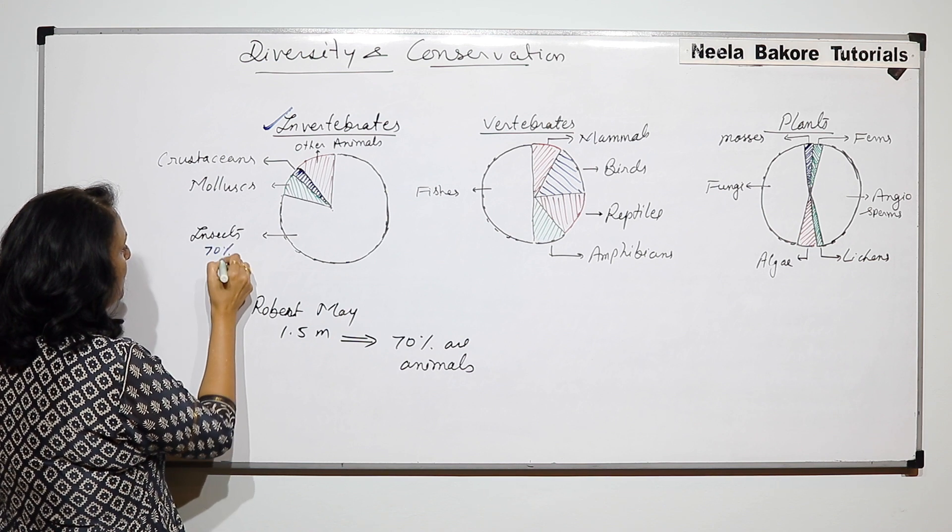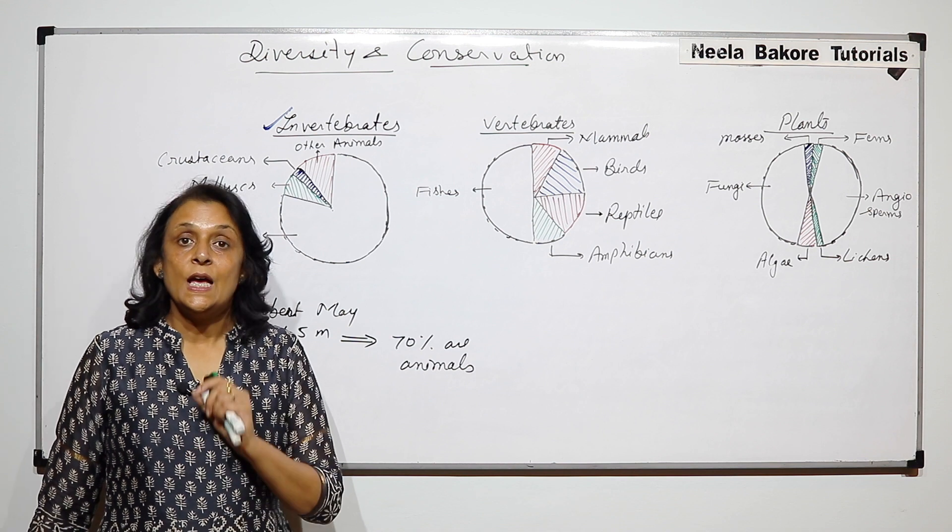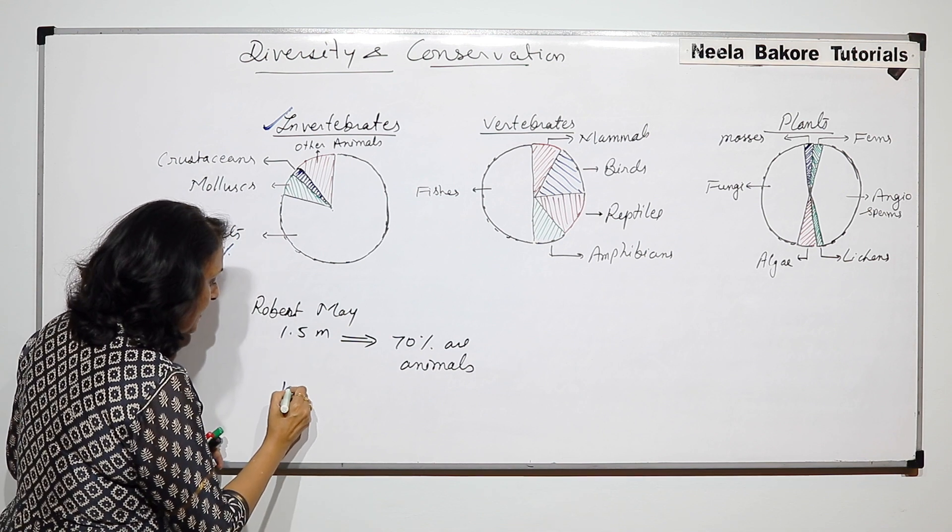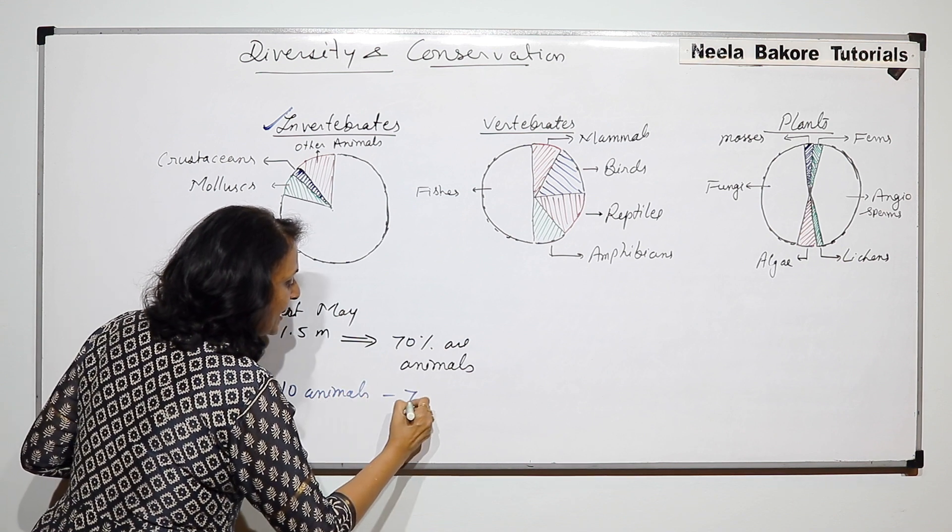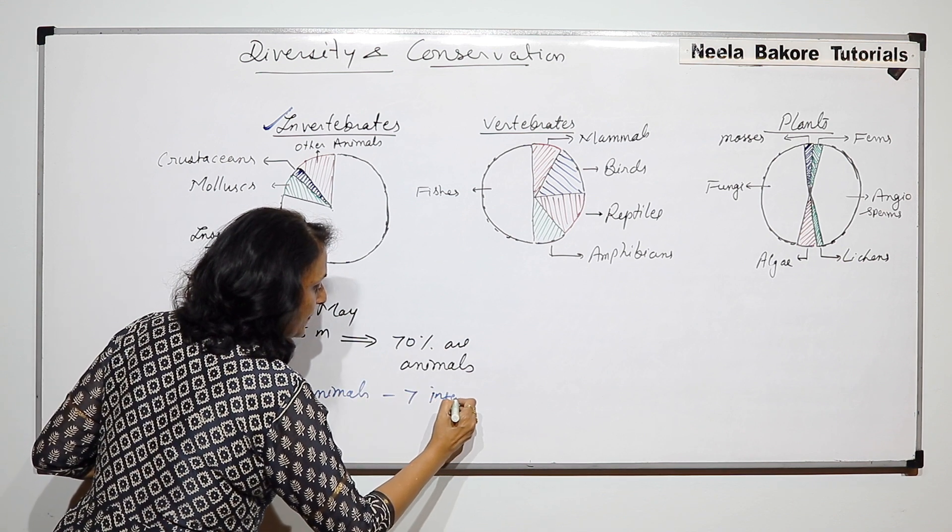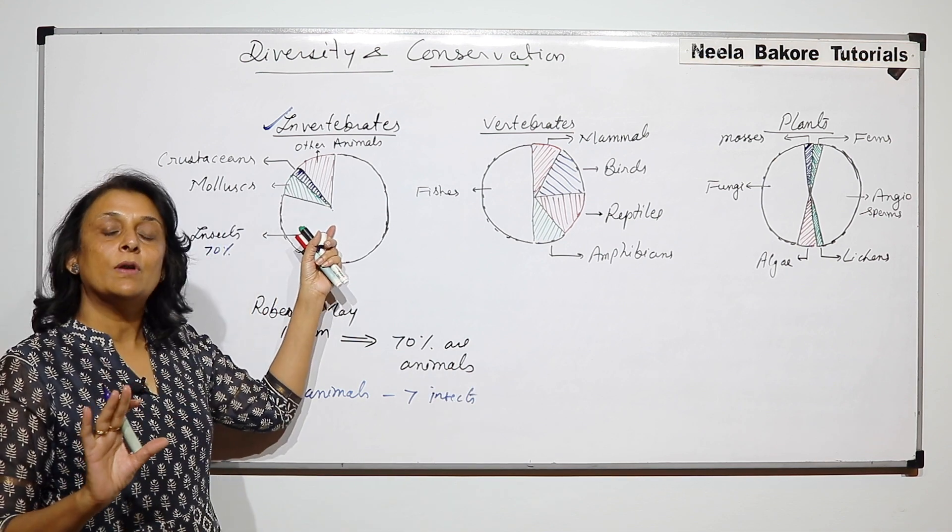About 70% of all animals are insects. That means if we study 10 animals there would be 7 insects, and this distribution is only about invertebrates.